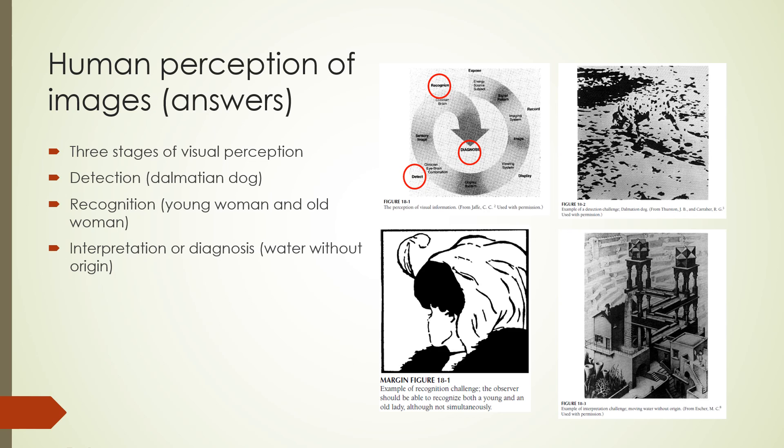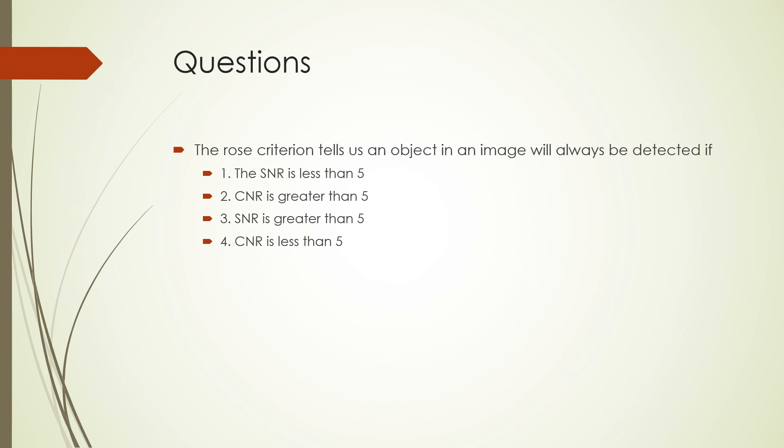First question. The Rose criterion tells us an object in an image will always be detected if: 1. The signal-to-noise ratio is less than 5. 2. Contrast-to-noise ratio is greater than 5. 3. Signal-to-noise ratio is greater than 5. 4. Contrast-to-noise ratio is less than 5. The correct answer is signal-to-noise ratio is greater than 5.